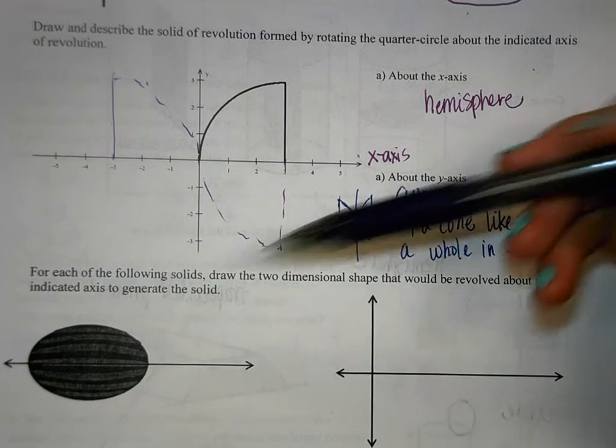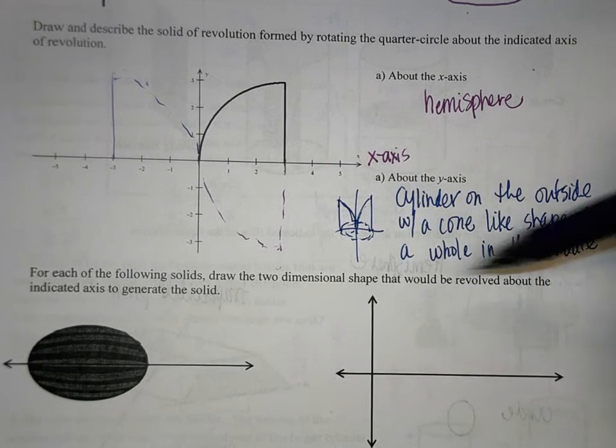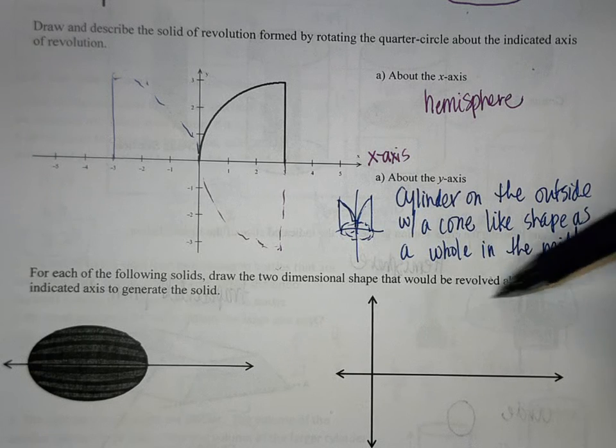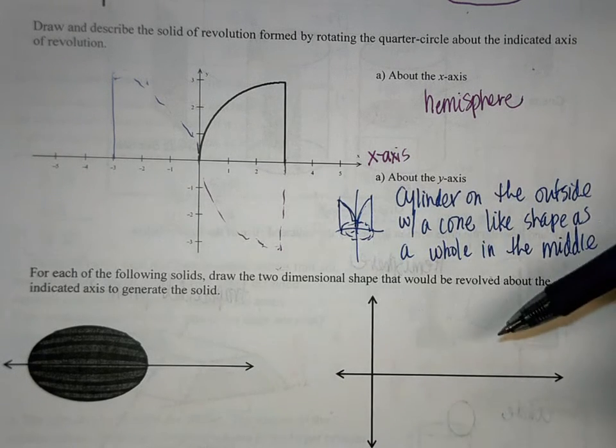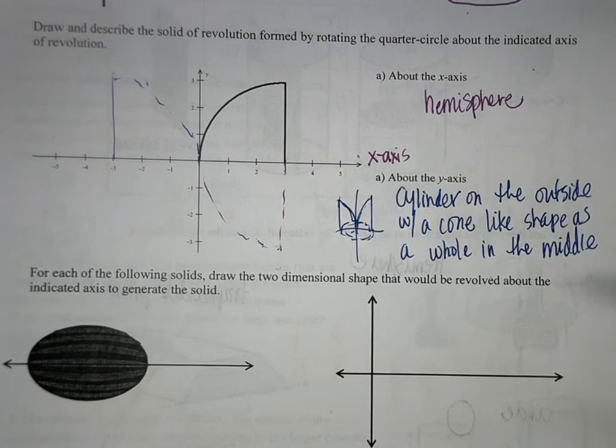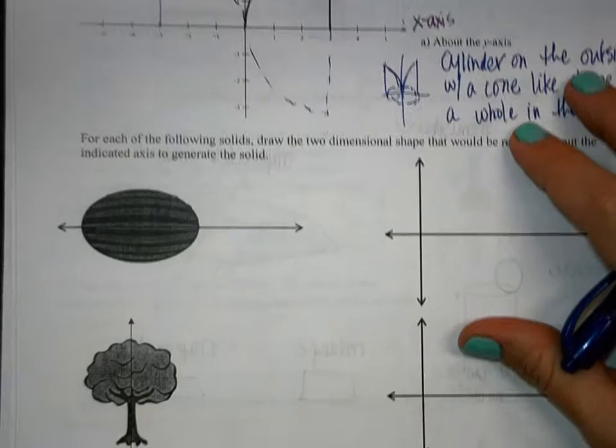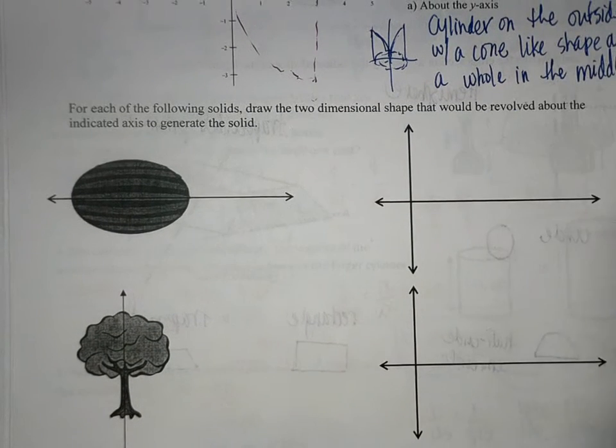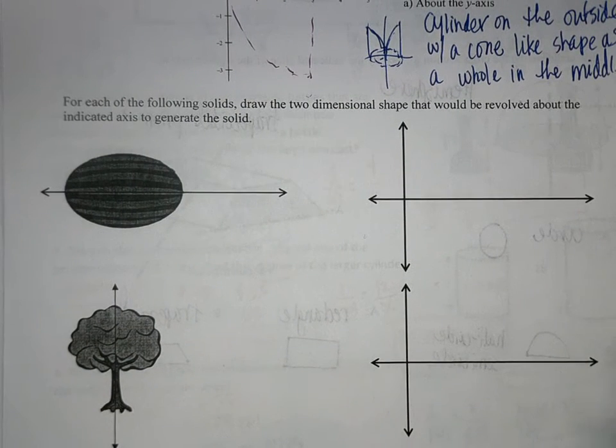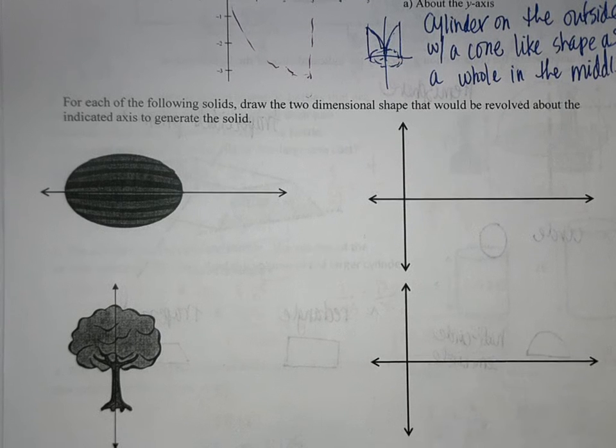For each of the following solids, draw the two-dimensional shape that would be revolved about the indicated axis to generate this solid. So we have a watermelon. What two-dimensional shape would need to be turned in order to make that?